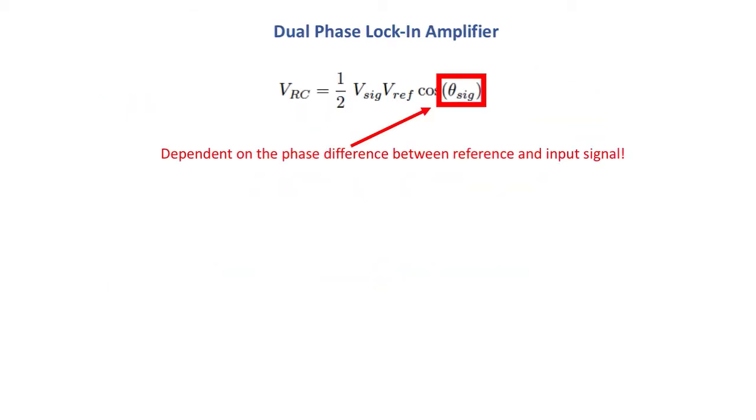So what we notice though is that this output is dependent on the phase difference and we don't really want that because if there is a phase difference we want to be able to take that into account. So we use a dual phase lock-in amplifier.